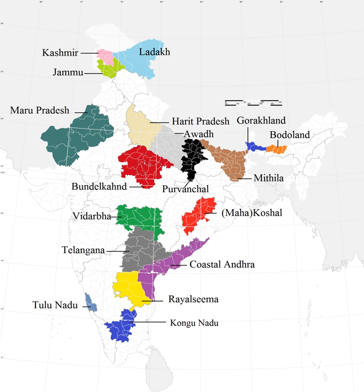The agitation for the creation of a separate Bodaland state resulted in an agreement between the Indian government, the Assam state government, and the Bodo Liberation Tigers force. According to the agreement made on 10 February 2003, the Bodaland Territorial Council, an entity subordinate to the government of Assam, was created to govern four districts covering 3,082 Bodo Kachari majority villages in Assam. Elections to the council were held on 13 May 2003, and Hagrima Mohillory was sworn in as chief of the 46-member council on 4 June.